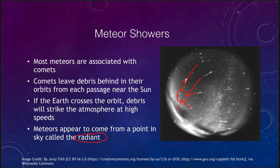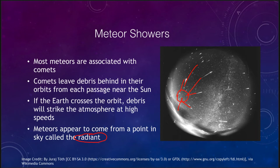We call that the radiant point — that is where they appear to come from. This is essentially an optical illusion. They are all traveling through space parallel to each other, and when we see them coming in they all seem to come from the same direction. It's the same optical illusion as looking at telephone poles or railroad tracks that stretch into the distance — they seem to converge, but if you traveled out there you'd see they're still exactly the same distance apart.